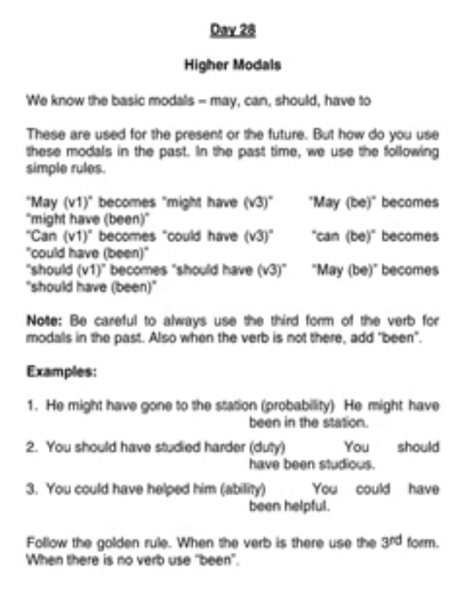We use the following simple rules. May V1 becomes might have. May be becomes might have been. Can V1 becomes could have V3 — be careful, with could have you have to use V3. Can be becomes could have been.